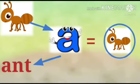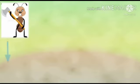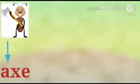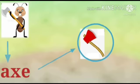Next, there is a small axe. The spelling of 'axe' is A-X-E. The word 'axe' starts with A, that's why we are going to circle the axe.